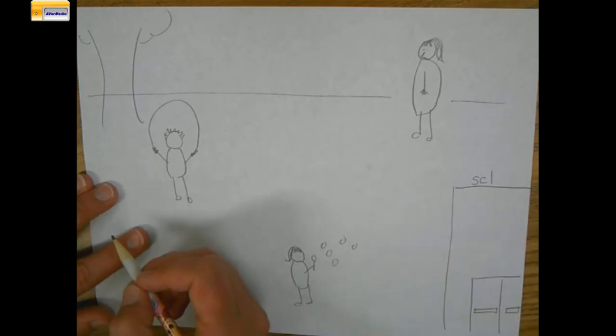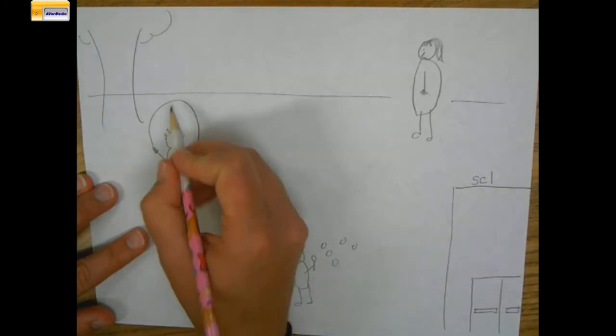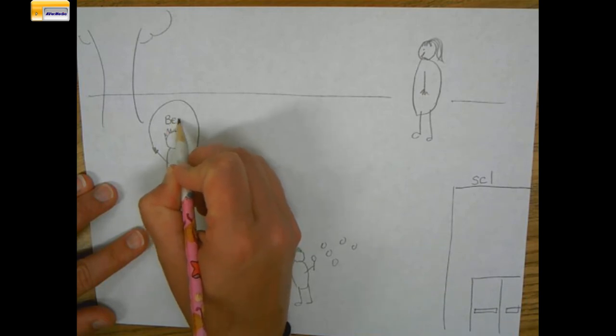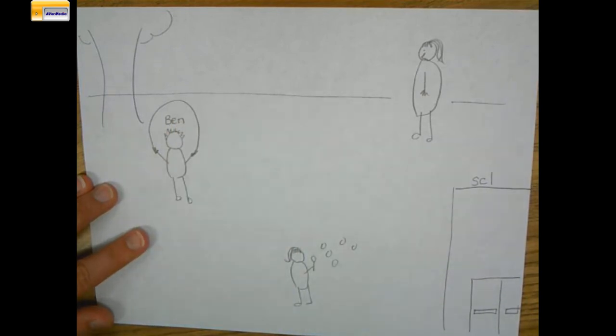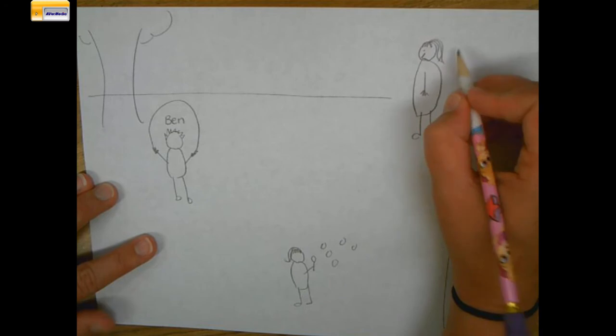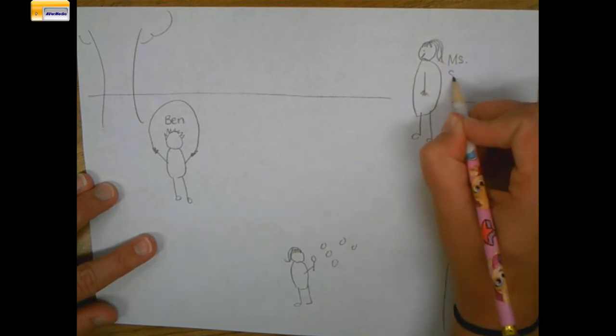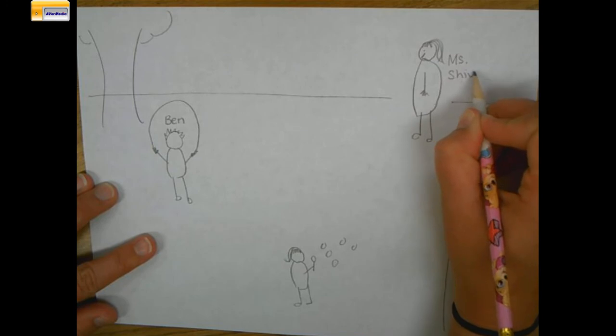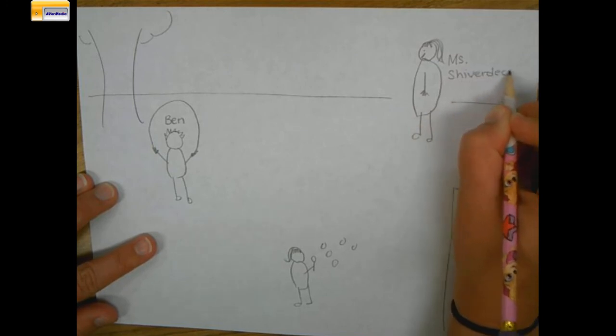Sometimes we know how to write the words. This is my friend. His name is Ben. So I know how to spell his name: B-E-N. I could write it really fast. And this is a teacher, Mrs. Shiverdecker. I know how to write her name too so I don't have to stretch that one out.